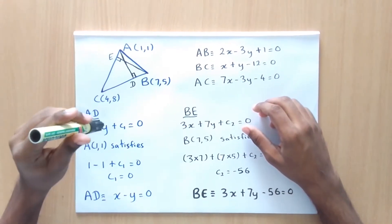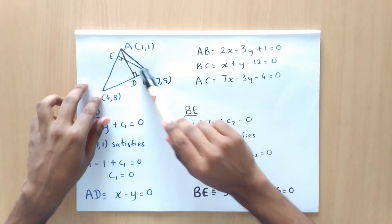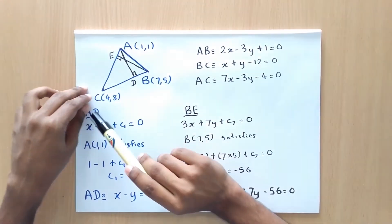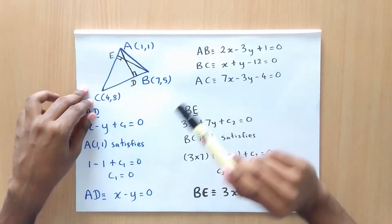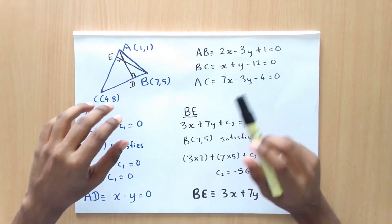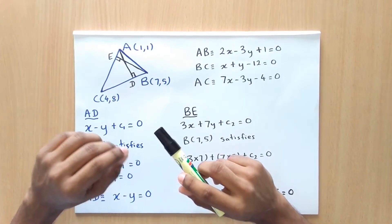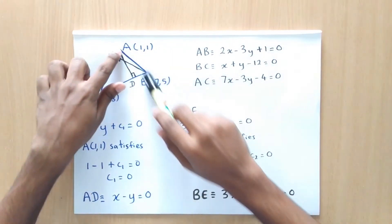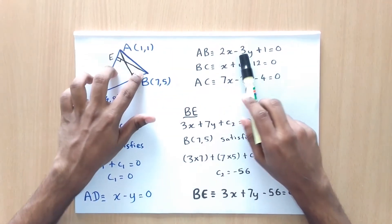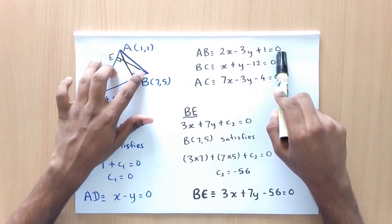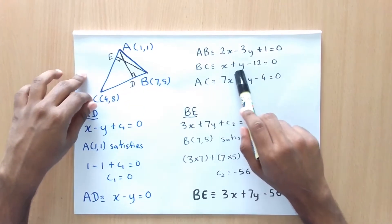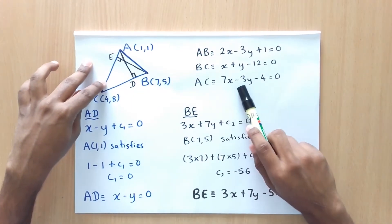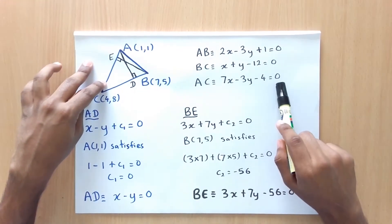So now we are going to find the points where the two altitudes meet and then check whether the third altitude also passes the same point. Using the two-point formula that we learned before, we can find the equations of the sides of the triangle. So AB will be 2x minus 3y plus 1 equals 0 and BC will be x plus y minus 12 equals 0 and AC will be 7x minus 3y minus 4 equals 0.